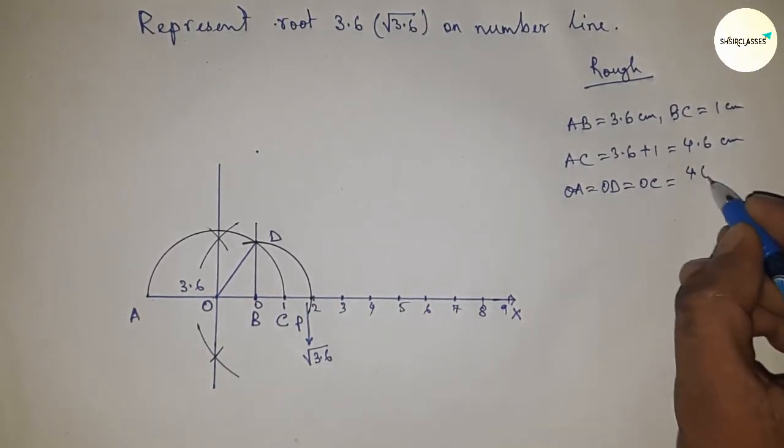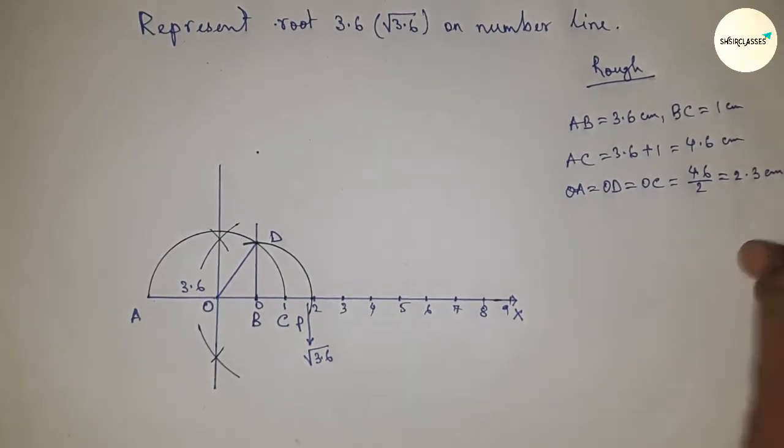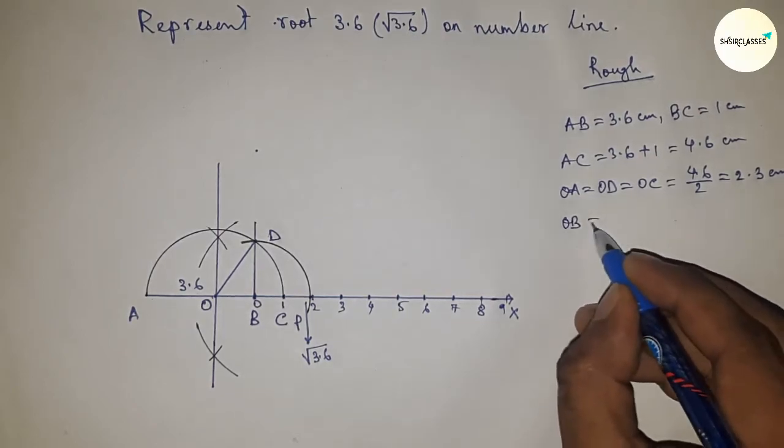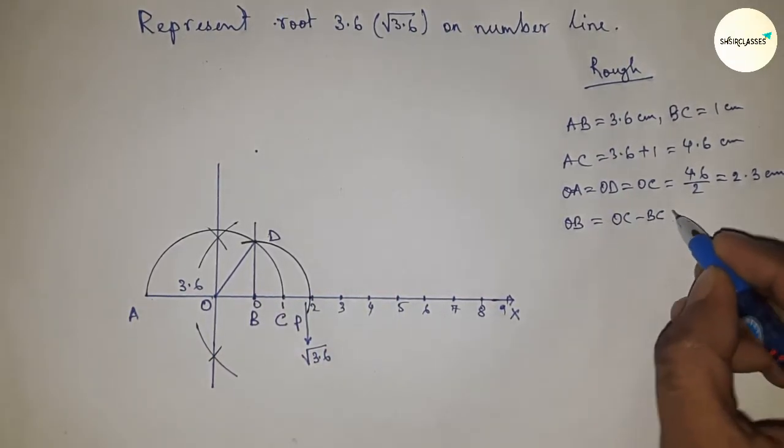Now distance OB equals OC minus BC, so OC minus BC equals 2.3 minus 1, which is 1.3 centimeters.